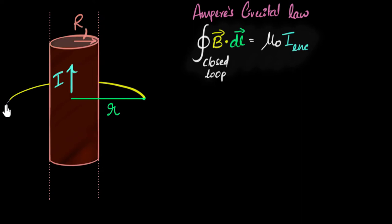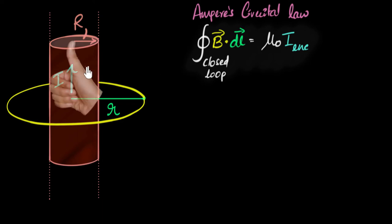And what's the direction of that field? Well we use right hand thumb rule. If the thumb points in the direction of the current, the encircling fingers will give us the direction of the field, and so our direction of the field would be this way.